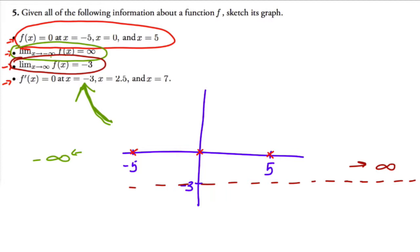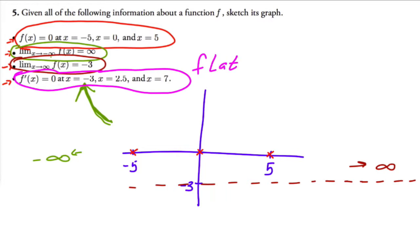The last condition says f'(x) equals zero at x equals negative three, two point five, and seven. At each of these points the function should be flat, because a derivative of zero means a high spot, low spot, or a flat spot. So at negative three and at seven the function should have flat spots.